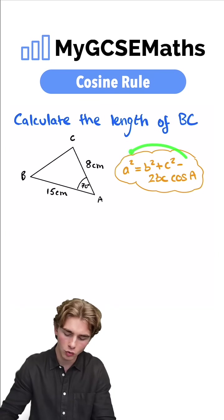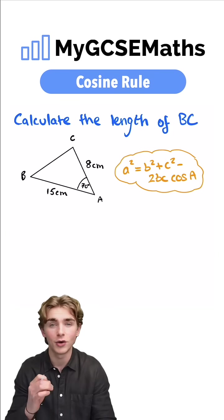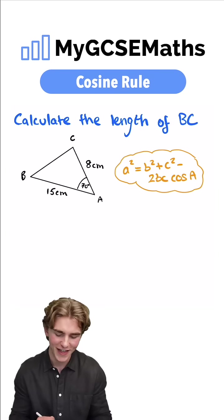So we can use our cosine rule which is given to you guys in the formula book that tells us that a squared equals b squared plus c squared minus 2bc cos a.